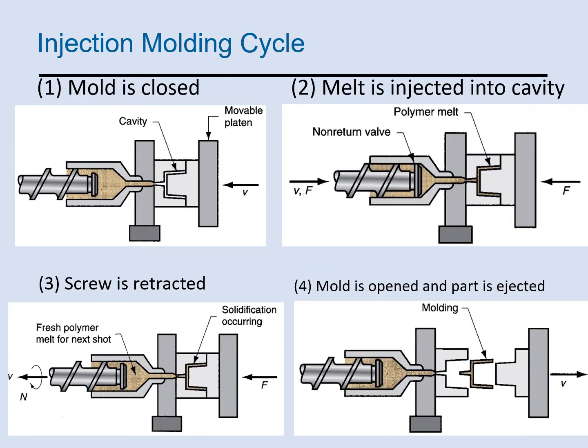Here we have the injection molding cycle. We have a screw and the polymer melt, with the cavity initially empty. The screw moves forward and pushes material into the mold, filling the cavity with polymer melt. Then the screw is retracted, solidification happens inside the mold, and the molding is ejected.